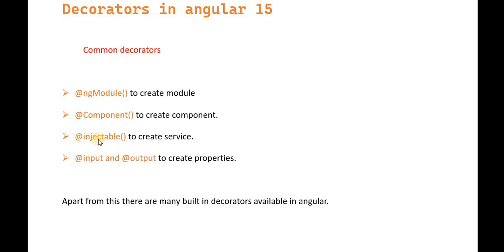Next we have @Injectable, which comes into play when we create any services. When we discuss services, I will show you that every service is basically injectable — that is also a decorator. Next are @Input and @Output, which are property decorators. For example, if you want to pass data from one component to another component, we use @Input and @Output, which we will discuss in coming videos.